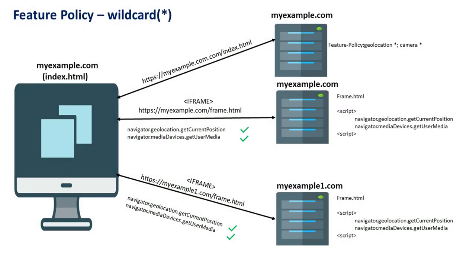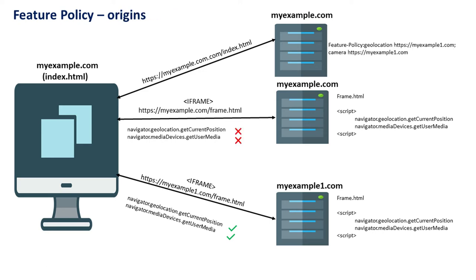Now let's see the behavior of setting the value as star. Setting star for geolocation and camera features means access is allowed irrespective of origin — allowed for the same document, same-origin requests, and also cross-origin requests. Next, let's see the behavior of setting specific origin values. Setting myexample1.com for both geolocation and camera APIs means access is allowed only for that specific origin. So myexample1.com/frame.html can access the APIs, but it is blocked for the same document, same-origin frames like myexample.com/frame.html, and other cross-origin domains.